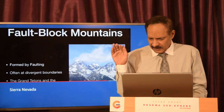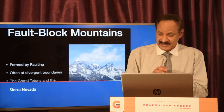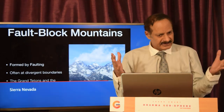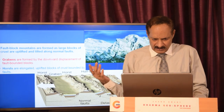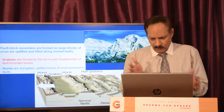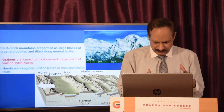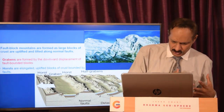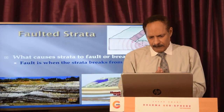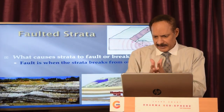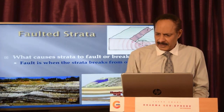Fault block mountains normally occur at divergent boundaries. For example, the Grand Tetons or the Sierra Nevada — the Sierra Nevada is a very typical fault block mountain. Fault block mountains are formed as large blocks of crust are uplifted and tilted along normal faults. When there is divergence at these boundaries, you have the formation of grabens and horsts.